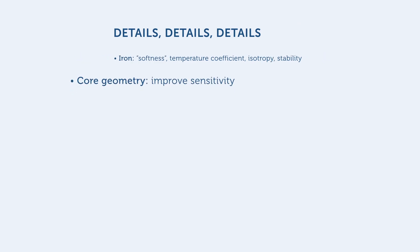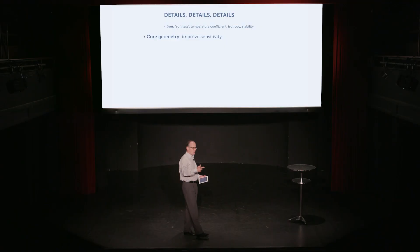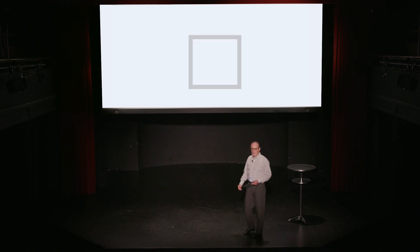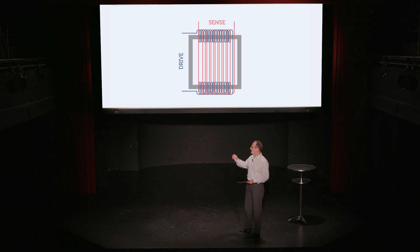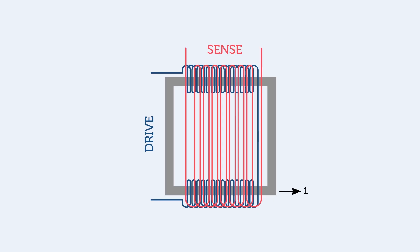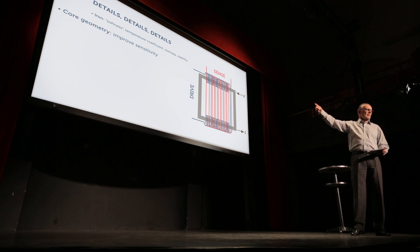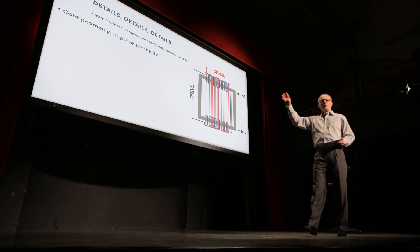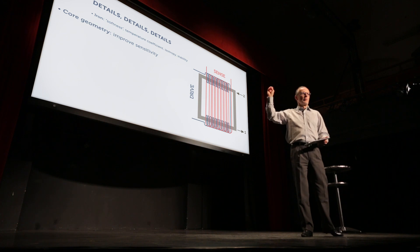Secondly, there's the geometry of the iron core. The simple iron bar that we drew before is actually a very bad geometry because the sense coil picks up the whole flux changes of the drive coil. A much better geometry is shown right here. Here we have, we've split the drive coil into two parts. One that generates a field going to the right, say, and one that generates a field going to the left. And the sense coil wraps around all of that and therefore the two components of the drive coil are canceled out.